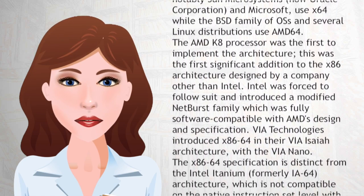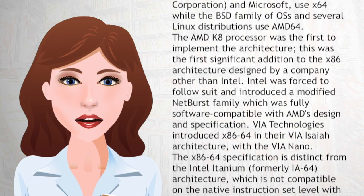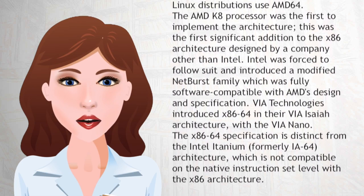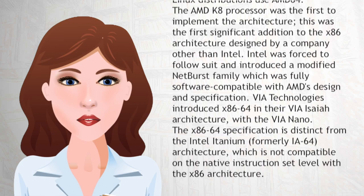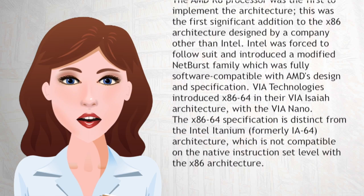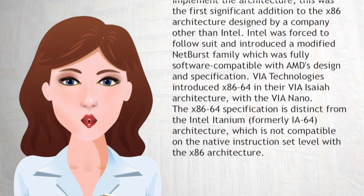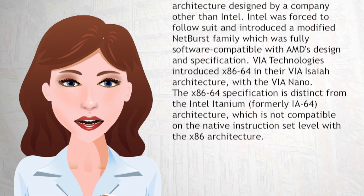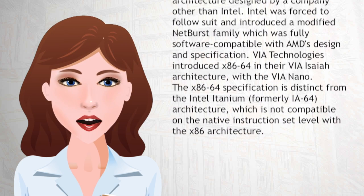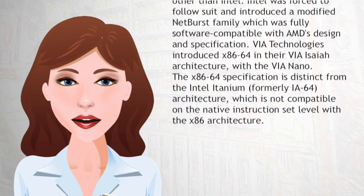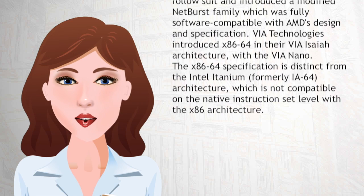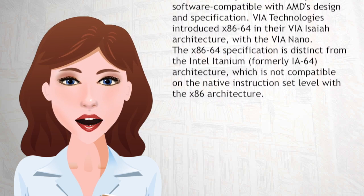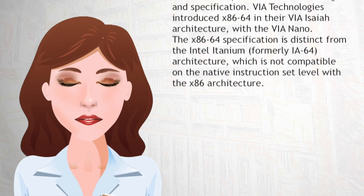The AMD K8 processor was the first to implement the architecture. This was the first significant addition to the X86 architecture designed by a company other than Intel. Intel was forced to follow suit and introduced a modified Netburst family which was fully software compatible with AMD's design and specification. VIA Technologies introduced X86-64 in their VIA architecture with the VIA Nano.